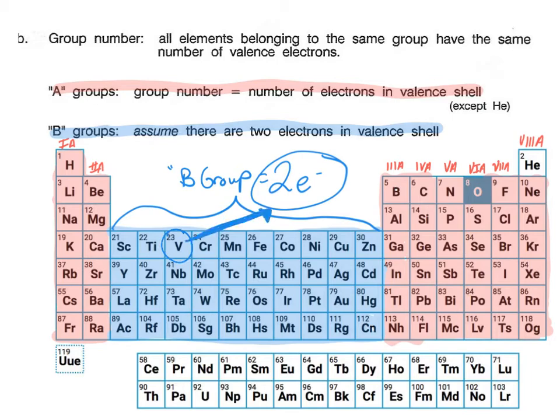No matter which B group element you pick, it will be two valence electrons. So for vanadium, two valence electrons. Ruthenium, two valence electrons. Platinum, two valence electrons. You don't even need to know which element I'm talking about. If you can find it on the periodic table and it's in group B, it's got two valence electrons.